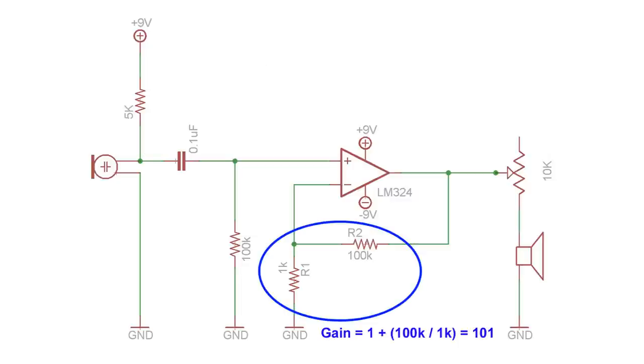Over here we have the amplifier, configured for a gain of roughly 100. The idea is that I want to take the 20 mV from the microphone and amplify it to 2 volts so I can hear it on a pair of headphones.